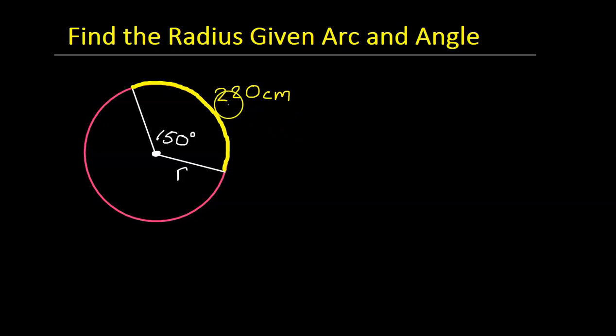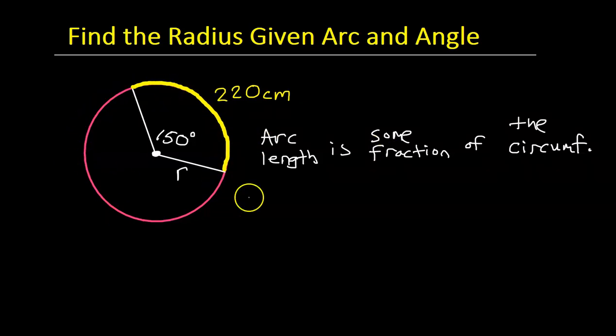So the key is, I'm going to give you the formula for arc length, and it works like this. Arc length is some fraction of the circumference. So that's just common sense right there. The arc length is a portion of the circumference of the circle, some fraction of the circumference. So I'm just going to take these words and turn it into an equation. I'm going to use the letter L to represent arc length.